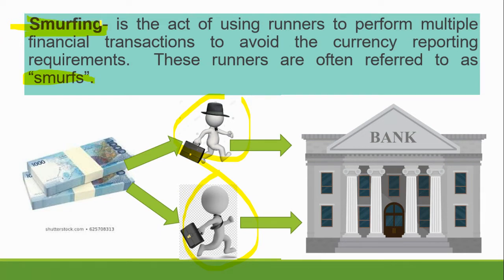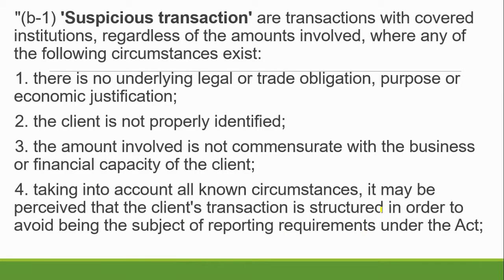To avoid currency reporting requirements, some people employ what is called 'smurfing.' Smurfing is the act of using runners to perform multiple financial transactions to avoid guaranteed reporting requirements. These runners are referred to as 'smurfs.' For example, if you have 500,000, you will divide it and ask two persons to deposit it at the bank — you are breaking up the amount so the bank will not report it to AMLC. That is called smurfing.